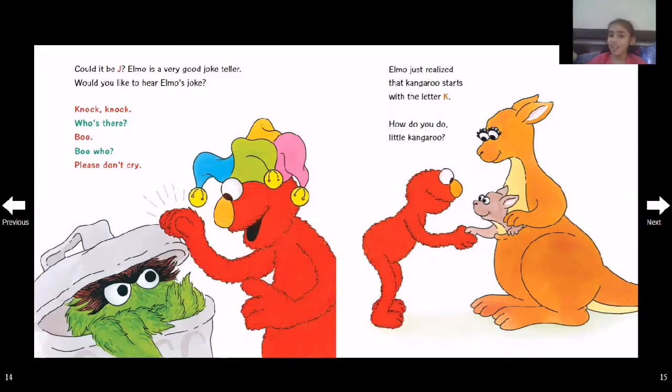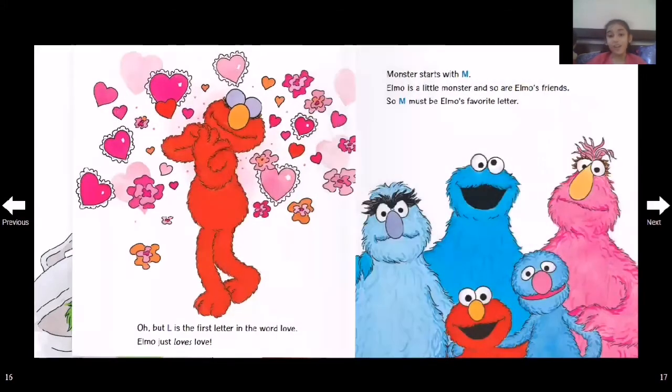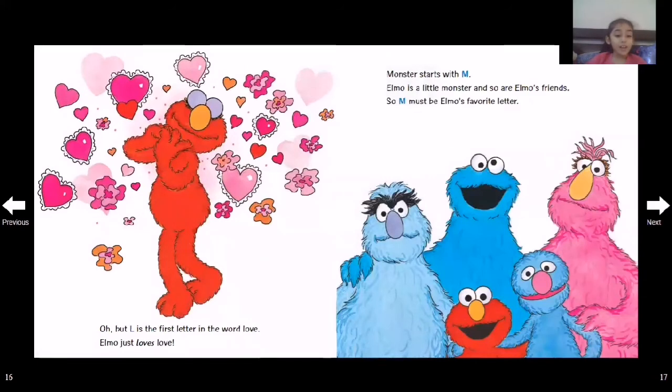Elmo just realized that kangaroo starts with K. How do you do, little kangaroo? But L is the first letter in the word love. Elmo just loves love! So many... M! Monster starts with M. Elmo is a monster, and so are Elmo's friends. So M must be Elmo's favorite letter.